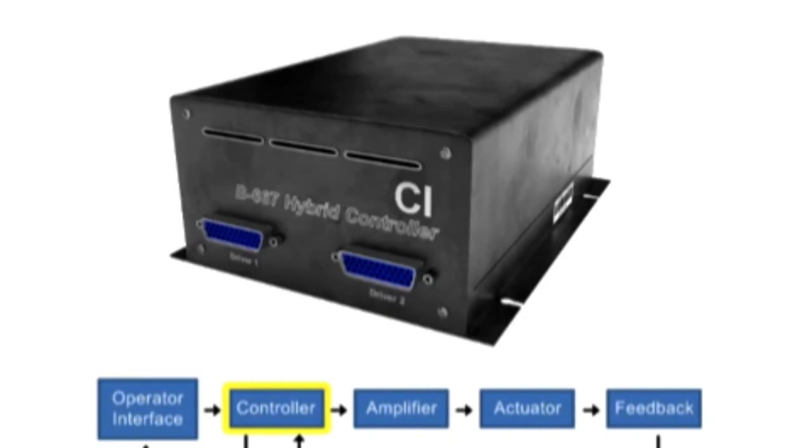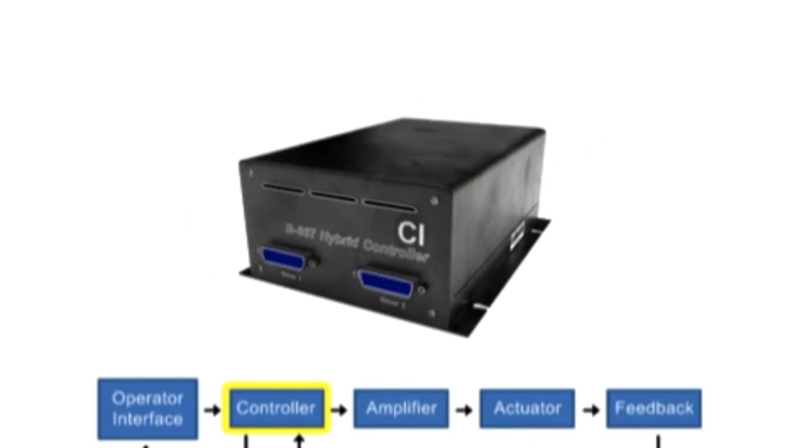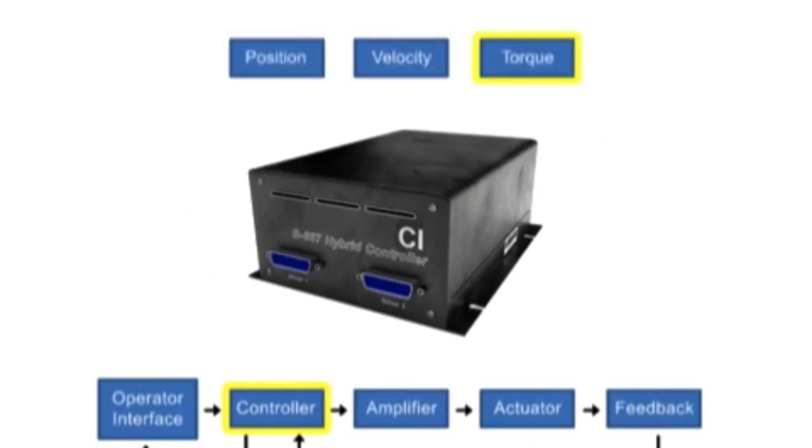The motion controller takes the user input from the operator interface and creates a motion profile for the actuator to follow. A simple motion profile consists of position, velocity, and torque.